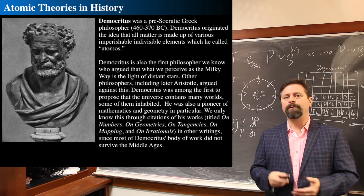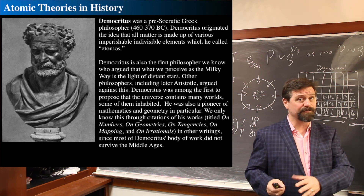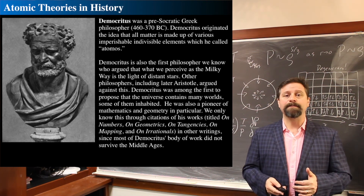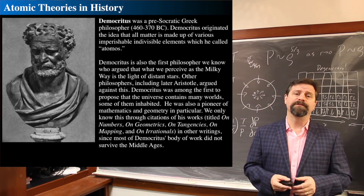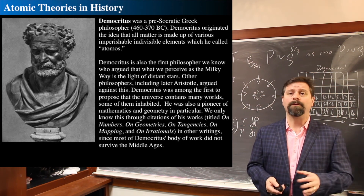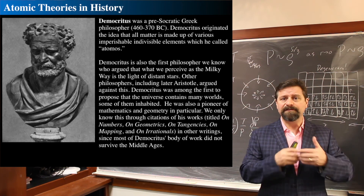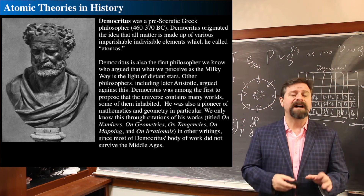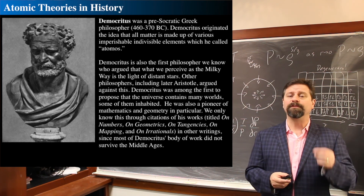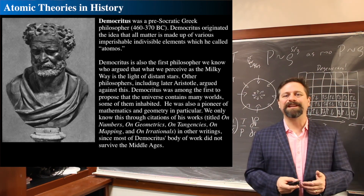Let's take a couple of ideas about the nature of matter. Some of the earliest recorded ideas come from Democritus, a pre-Socratic philosopher in ancient Greece around 400 BC, who came up with the concept of an indivisible unit of matter—meaning you can cut something and keep cutting and it doesn't divide. That's where the word atom comes from: atomos, meaning not divisible, not cuttable. Tomos means to cut; a means not. So the atom is that which cannot be cut.